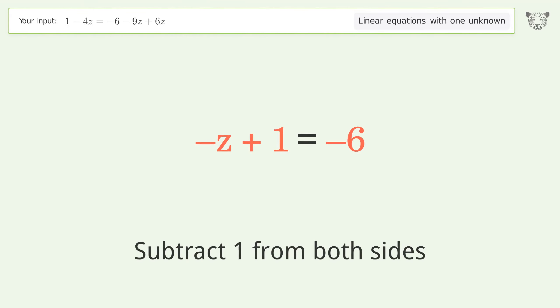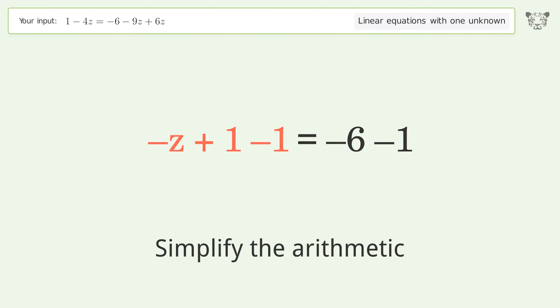Group all constants on the right side of the equation. Subtract 1 from both sides. Simplify the arithmetic.